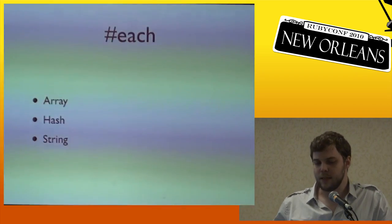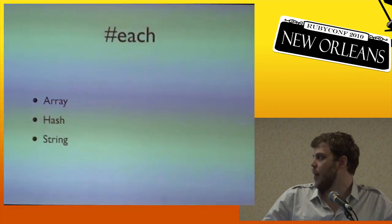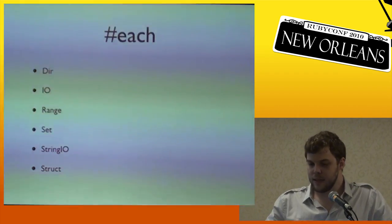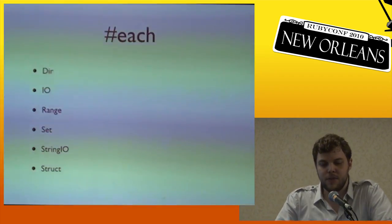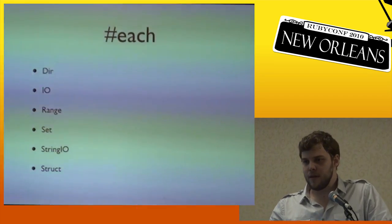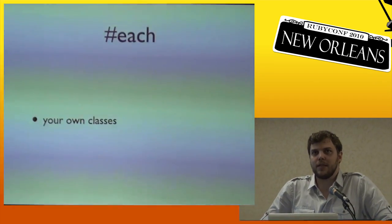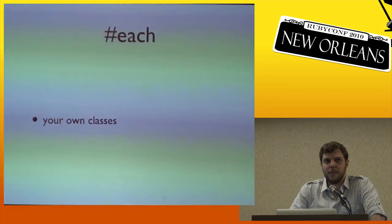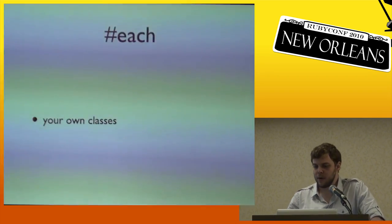The each method is found in a number of places in Ruby — most commonly array, hash, and string, but also in Dir, IO, Range, Set, StringIO, Struct, and a bunch of others. You can also have an each in your own class. Explaining how to write each might give us a good understanding of how internal iteration works in Ruby at a deeper level. I'm going to talk about writing each using a linked list class.